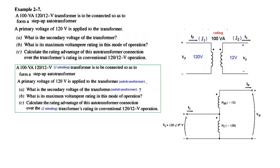And the third one is to calculate the rating advantage of this autotransformer connection over the transformer's rating in conventional 2-winding operation. So we just saw in the previous example, the rating advantage was six times. So here also we have to find the rating advantage between the two winding transformer and the auto transformer.